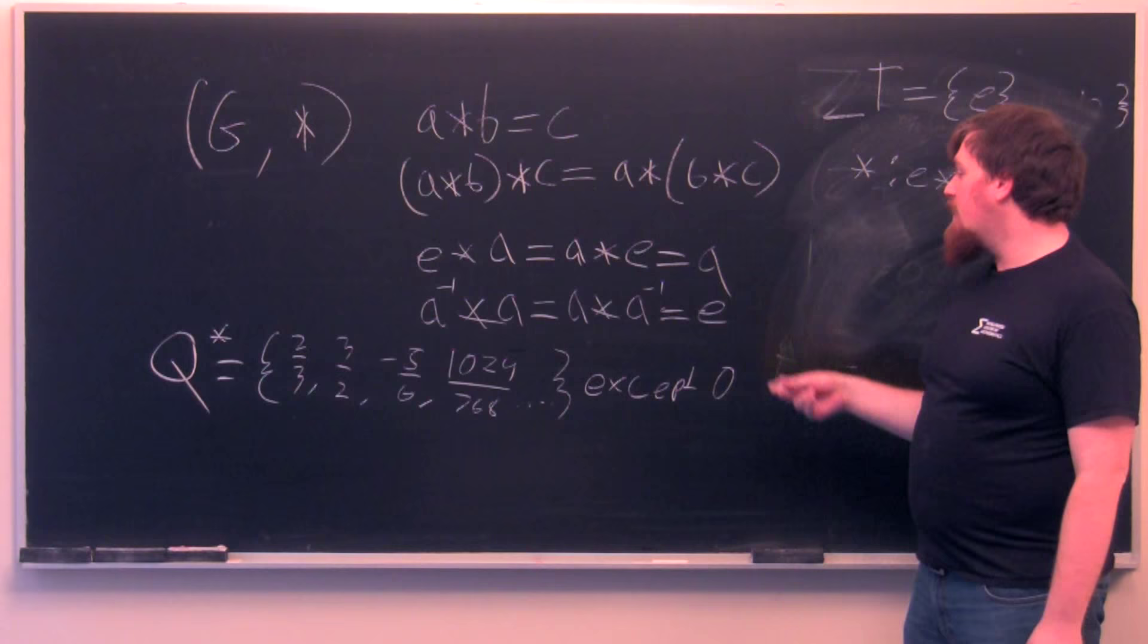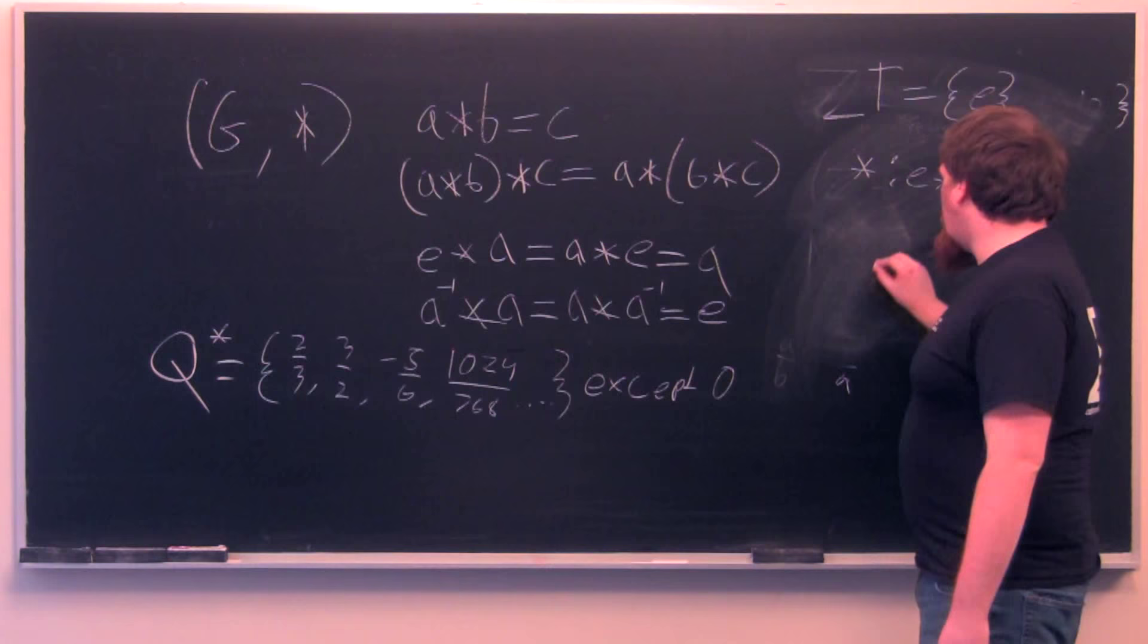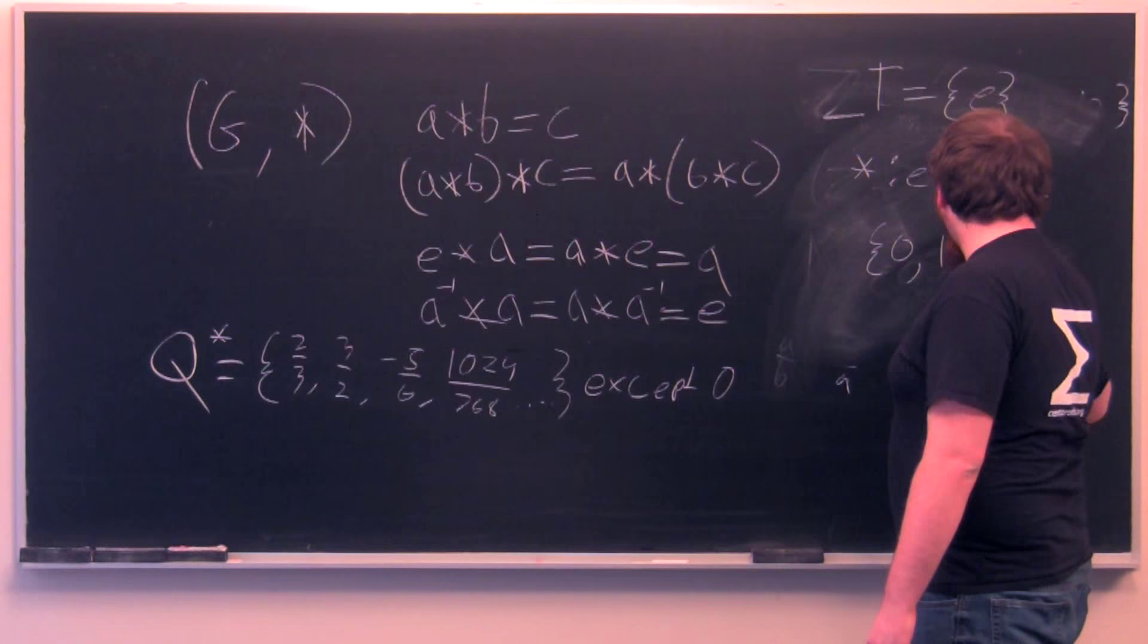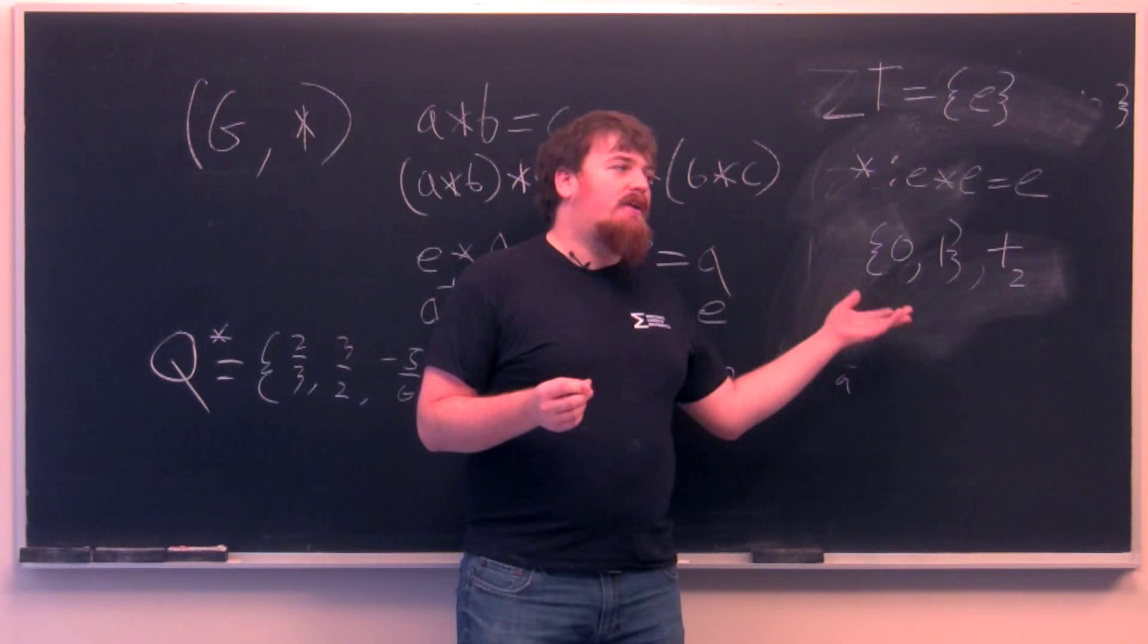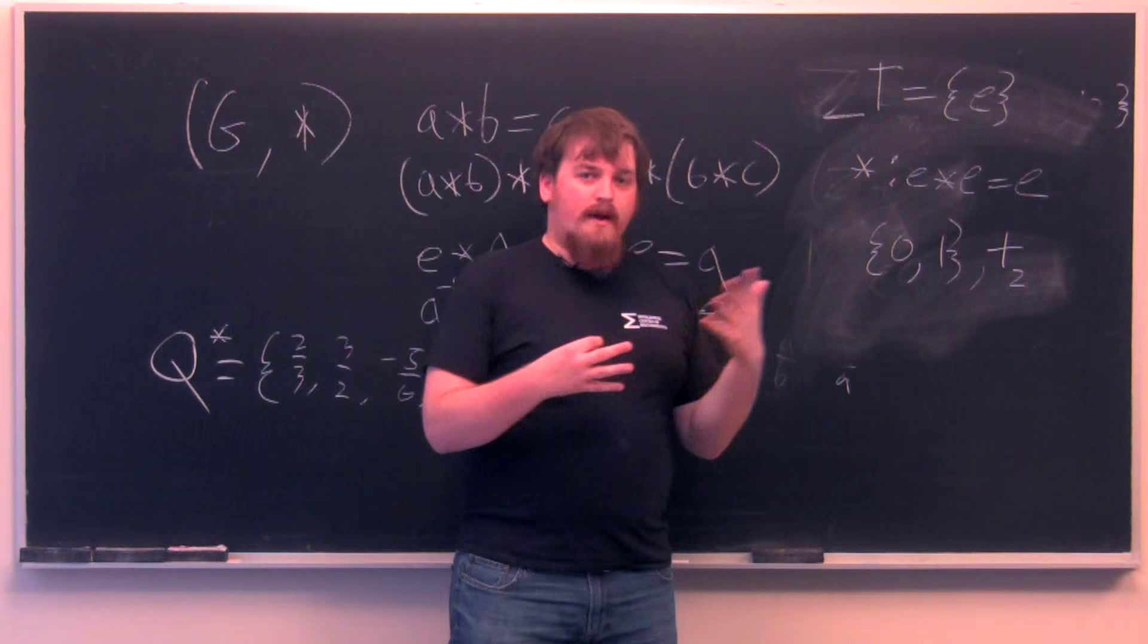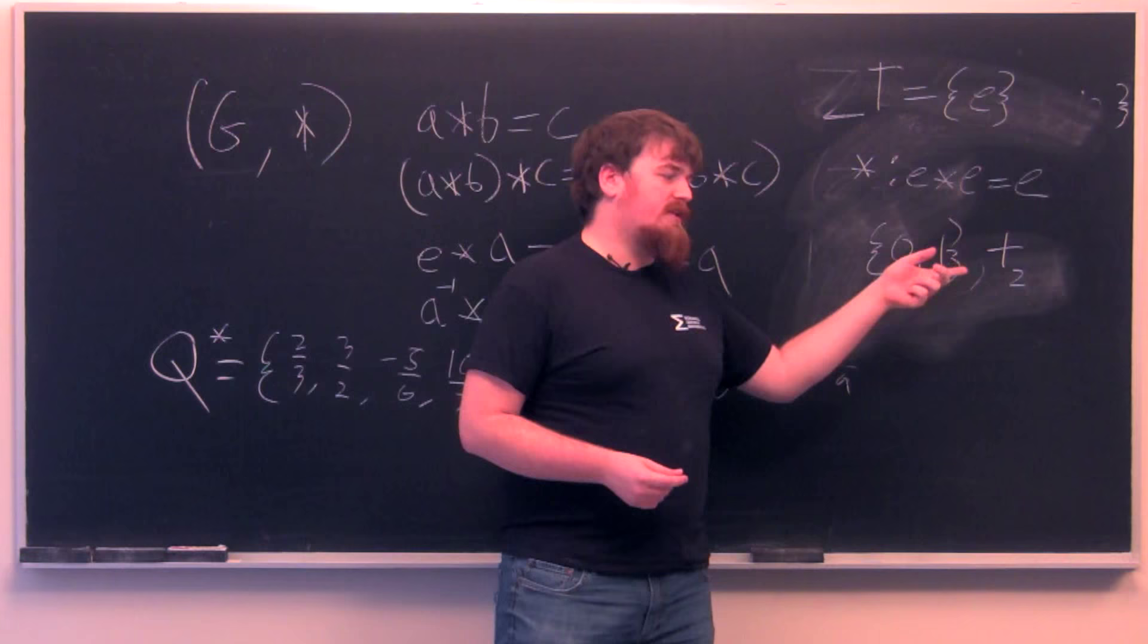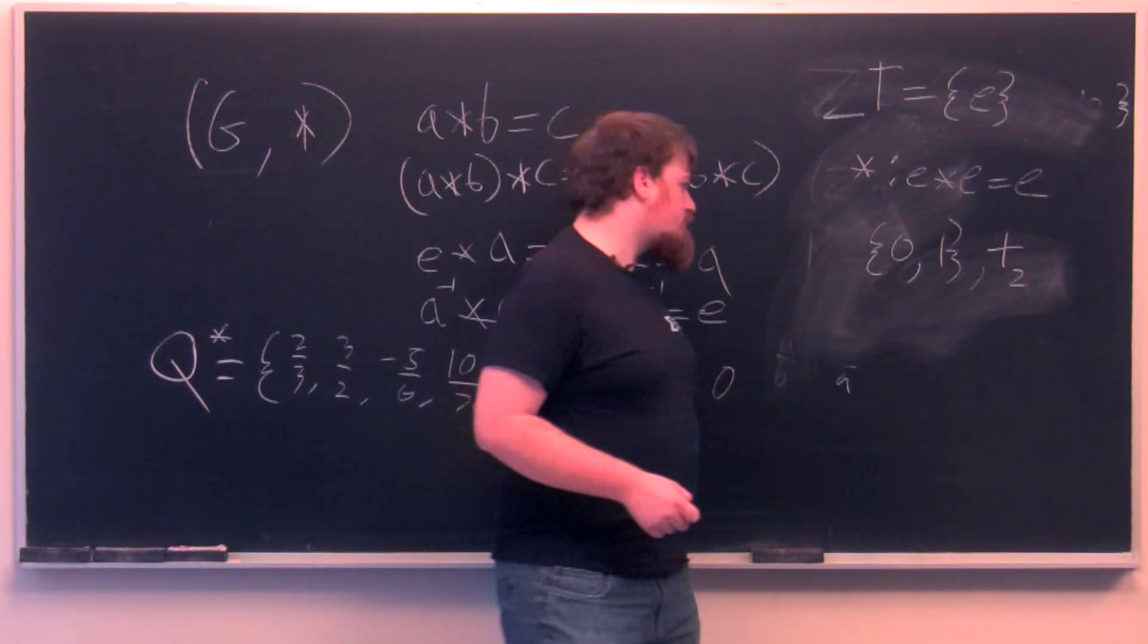A less trivial, no pun intended, finite group would be the group consisting of 0, 1 with its operation being addition mod 2. This means that when you add two things in this set, you take the remainder after dividing by 2. So 0 plus 0 is 0. 0 plus 1 is 1. But 1 plus 1 instead of being 2 is 0 because 2 has 0 remainder after being divided by 2.